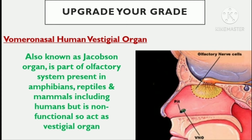Another important vestigial organ is the vomeronasal organ, also known as Jacobson's organ, which is present as a vestigial organ in humans. This organ acts as a chemoreceptor and is part of the olfactory system in amphibians, reptiles, birds, and other mammals. Specifically in placental mammals, it is present as chemical sensation cells in the main nasal chamber. It detects different chemicals present in air or water — in the form of pheromones and oxidative organic chemicals — to provide stimuli or information about mating, copulation, sex behavior, and identifying an opposite partner.